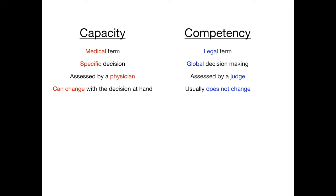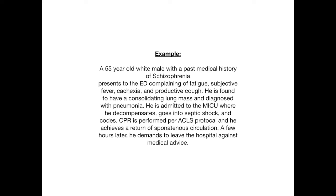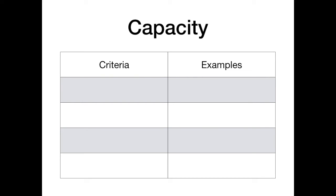The best way to understand the four components of capacity is to use an actual example like you might see on a test. There's a 55-year-old male with a past medical history of schizophrenia who presents to the ED complaining of fatigue, subjective fever, cachexia, and productive cough. He's found to have a consolidating lung mass and is diagnosed with pneumonia. He gets admitted to the medical ICU, decompensates, goes into septic shock, and codes. CPR is performed per ACLS protocol and he achieves return of spontaneous circulation. A few hours later, he's demanding to leave the hospital against medical advice.